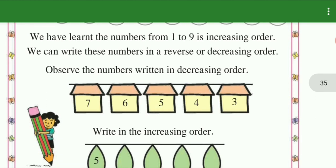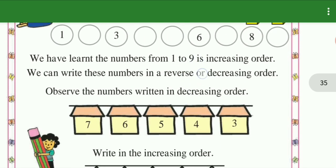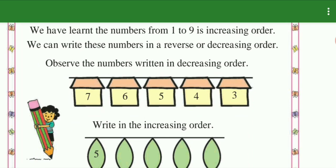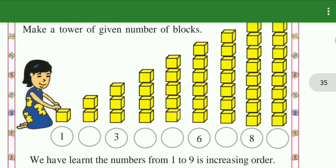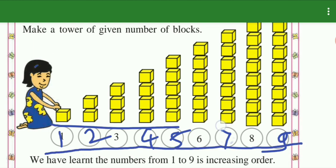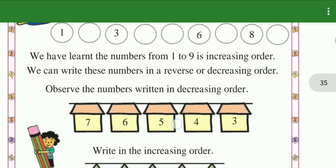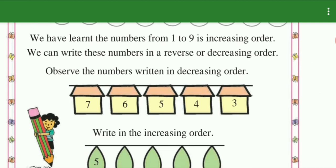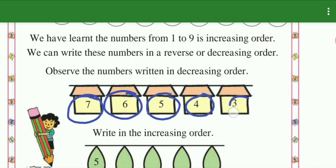We have learned the numbers from 1 to 9 in increasing order. We can write these numbers in a reverse or decreasing order. Observe the numbers written in decreasing order: seven, then six, decreasing values, four, three.